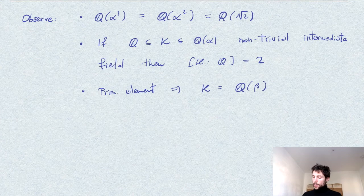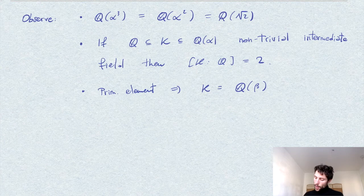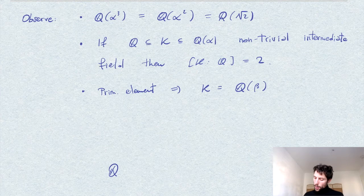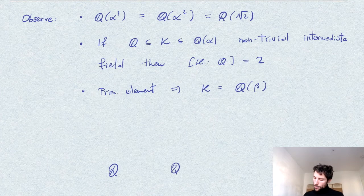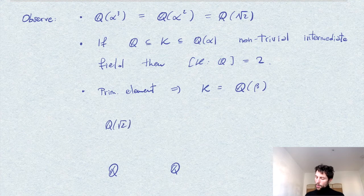We know K is a simple extension of the form Q(β) of degree 2. As usual, we have our diagram of the ground fields: the extension Q(√2), with an isomorphism (which we can take as the identity), and here we have K = Q(β).